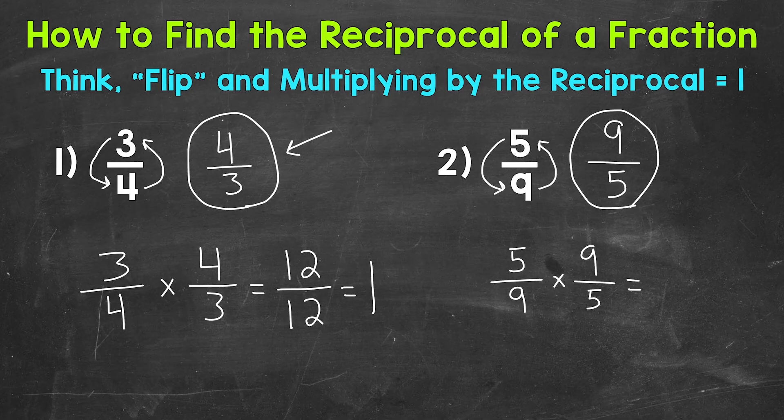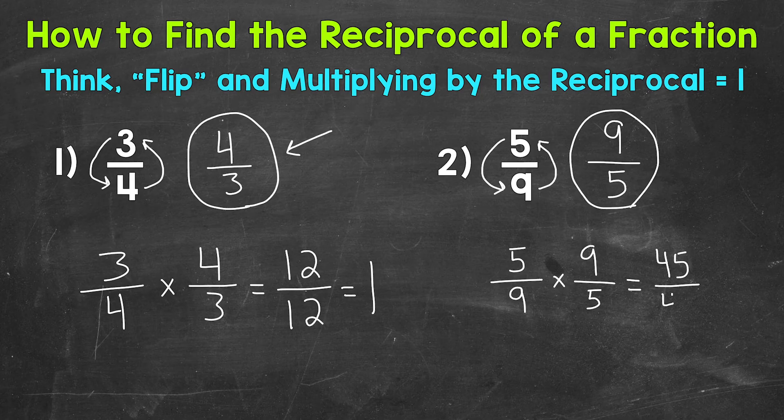So numerators, 5 times 9, that's 45. Denominators, 9 times 5, that's 45. Same numerator, same denominator, that equals 1.